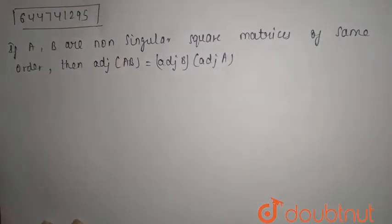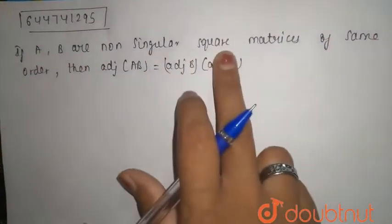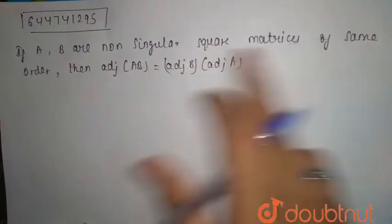Hello students, today's question is: if A and B are non-singular square matrices of same order,